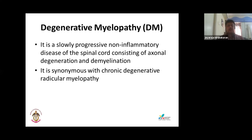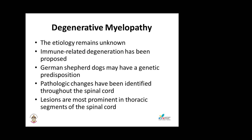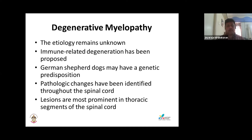Degenerative myelopathy is a slowly progressive, non-inflammatory disease of the spinal cord consisting of axon degeneration and demyelination. Synonymous with chronic degenerative radiculomyelopathy. The etiology remains unknown; there is some immune-related degeneration. It was originally thought to be a disease of German Shepherds but has been reported in many breeds. Pathological changes are seen throughout the spinal cord, mostly in the thoracolumbar area.